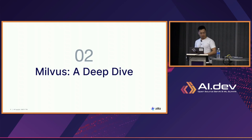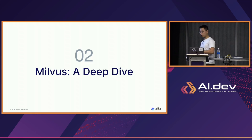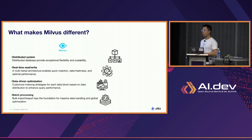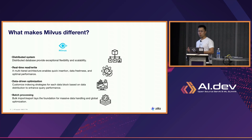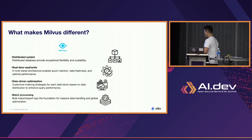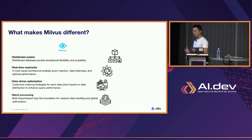Now we've done a recap of vector search and why it's important. I want to do a bit of a deep dive into Milvus. Recently, a lot of folks have been becoming more aware of what vector databases are and what vector search is. For Milvus, we've been developing it since 2018 — for five years. A lot of people come up to me and ask: I can build a vector database in a weekend, or over two weeks, or maybe even a month. What makes Milvus so special? Why should I use Milvus over another vector database or some other options out there?